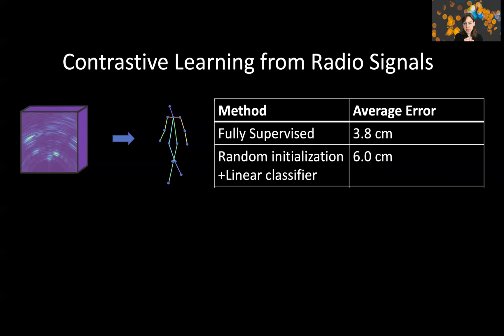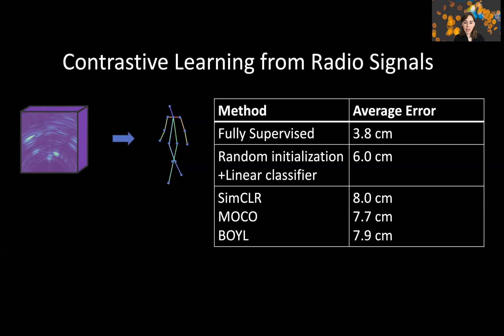We used state-of-the-art contrastive learning approaches such as SimCLR, MoCo, and BYOL. And here are the results. We were shocked to see that the errors are actually higher than a random representation. The error becomes on average 8 centimeters, as opposed to 6 centimeters with random initialization and 3.8 with full supervision. So what's going on here?